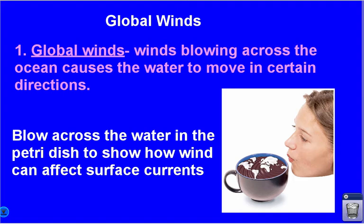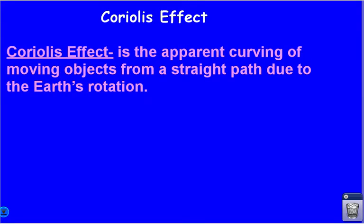Global winds are consistent — they're always in the same place and always blowing in the same direction, affecting a larger area. It's not like the wind in your backyard. The next factor is the Coriolis effect — the apparent curving of moving objects from a straight path due to the Earth's rotation. The Earth's rotation causes what would normally be a straight path of wind or ocean currents to actually curve.